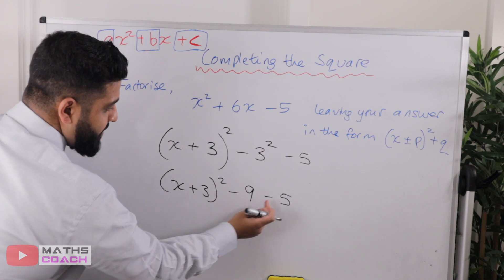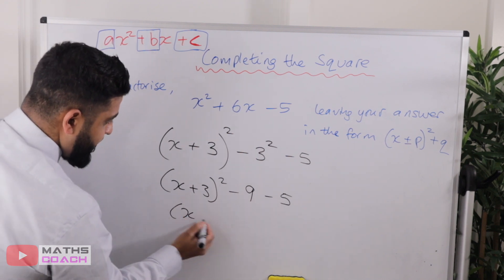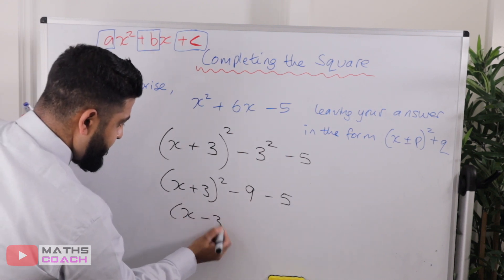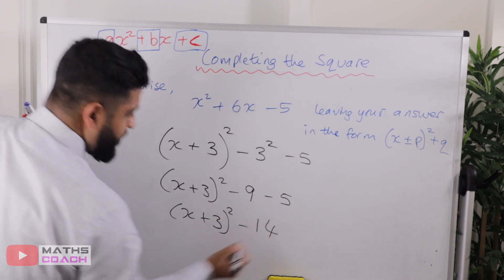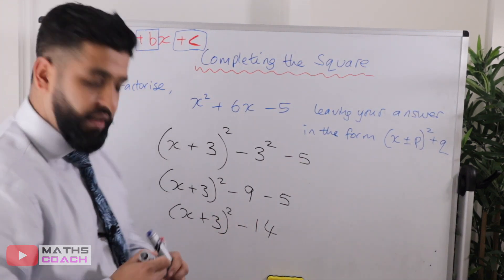So nine minus nine minus five is minus fourteen. So that's it. That's our answer.